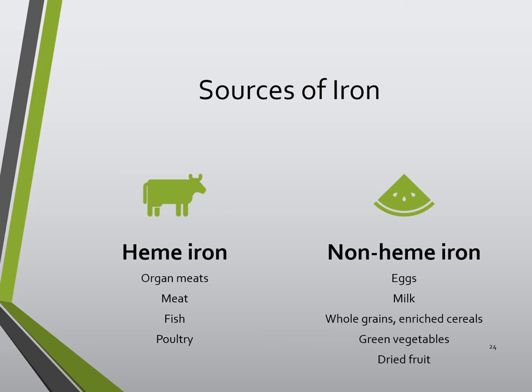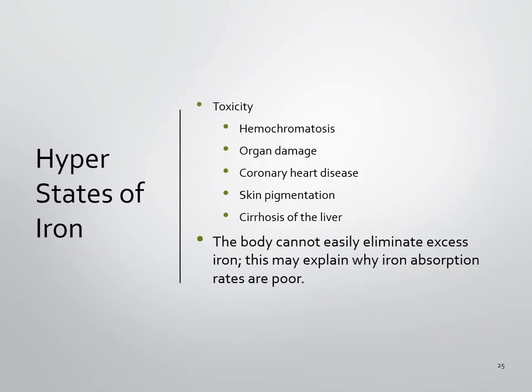Iron is one of the most difficult minerals to obtain in adequate amounts in the American diet, and a lot of people are anemic — mostly women. As far as toxicity, too much iron leads to hemochromatosis, which causes organ damage including coronary heart disease, skin pigmentation changes, and cirrhosis of the liver. The body does not easily eliminate excess iron since transferrin continuously recycles it, which explains why absorption rates are poor.